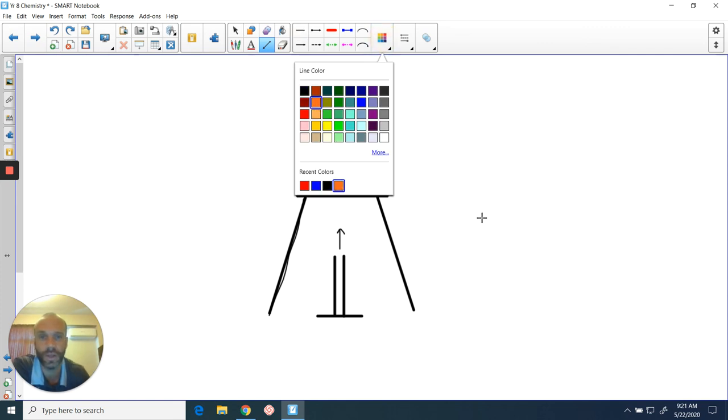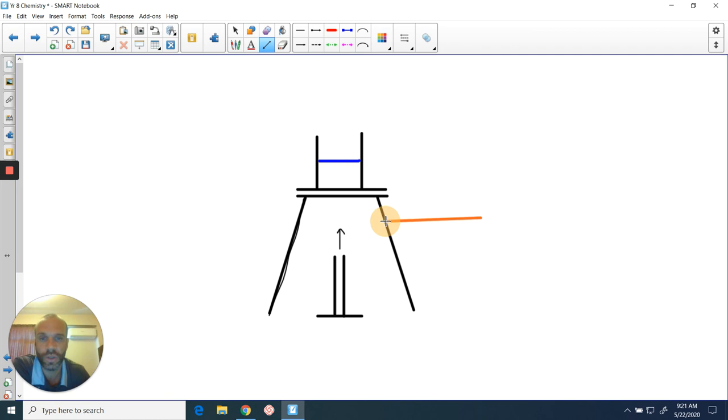Just to indicate what I mean by that, I'll change the color here of the line. The line should touch the tripod if I'm labeling the tripod. The line should touch the beaker if I'm labeling the beaker. The line should touch the Bunsen burner if I'm labeling that. The line should touch the wire gauze if I'm labeling that.